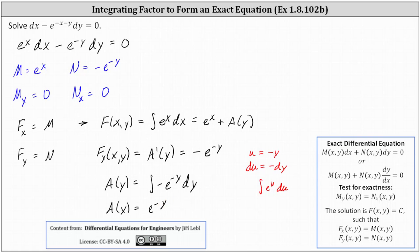So now we know the potential function F of x, y is equal to e to the x plus a of y, but a of y is e to the negative y, giving us e to the x plus e to the negative y. Therefore, the implicit form of the general solution is e to the x plus e to the negative y equals c.